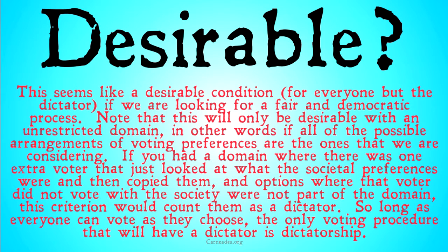Imagine you had a domain where there was one extra voter who couldn't vote how they liked. They had to vote with whatever the society preference was. They just looked at what the preferences of everyone else in the society were, whatever the system decided was going to be the societal preference, and then just copied them. Options where that voter didn't vote with the societal preference were not part of that domain.